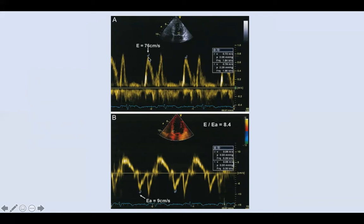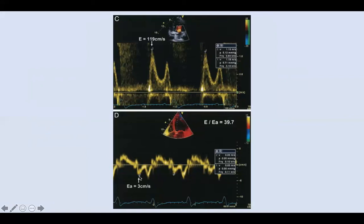To measure E/E prime: on the mitral valve Doppler, measure E from the menu under mitral valve. Then for tissue Doppler, at the septum at the mitral valve annulus, press PW to get E prime and A prime, then go to menu, mitral valve, E prime, and measure E prime. You should get the ratio automatically. An E/E prime of 8.4 is normal. However, if E prime is very small and the ratio comes to 39, that is very high and indicates diastolic dysfunction.